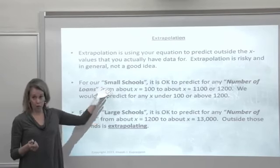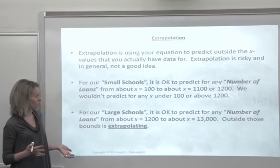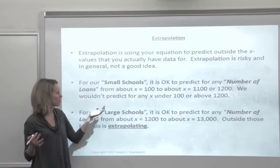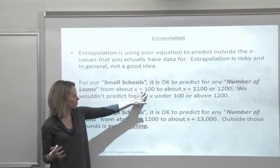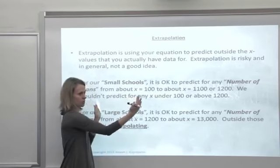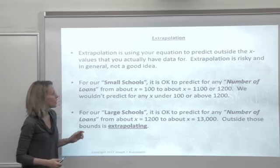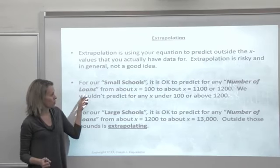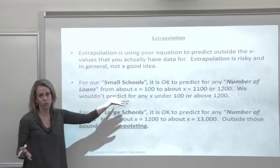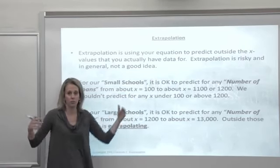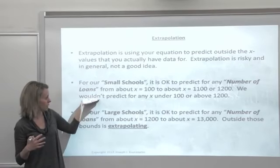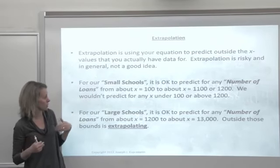For the small schools regression equation, it's okay to predict number of loans for schools that ranged from issuing about 100 loans to somewhere around like 1,100, 1,200. You want to see what the scope of that model was. You wouldn't want to use the small schools regression equation to predict the loan value for a school that issued 5,000 loans. That's outside the scope of that data that the regression equation was based on.